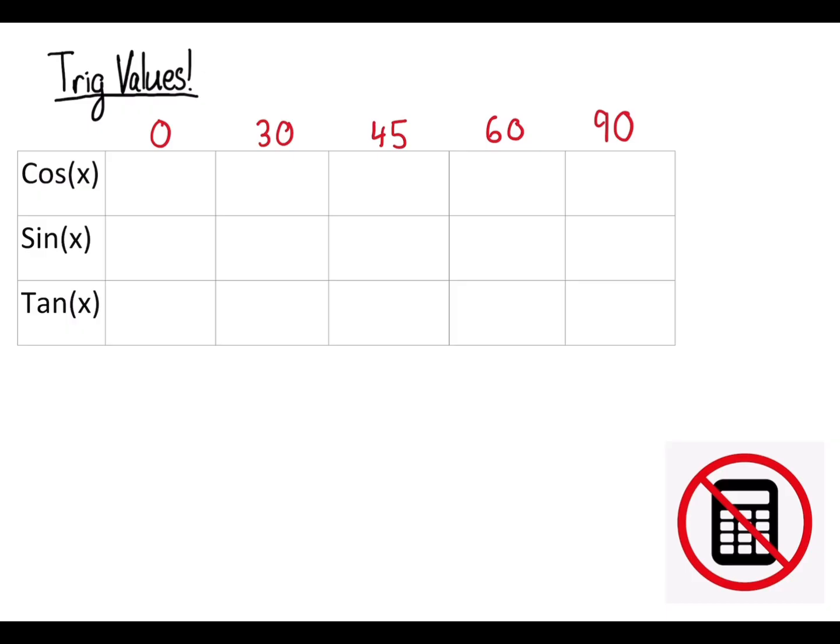So first we'll be going through some trig values that you must know off by heart. First of all, we have cos of 0, which is 1, and sin of 0 and tan of 0 are both 0. Those just remember them off by heart, it shouldn't be too hard to remember.